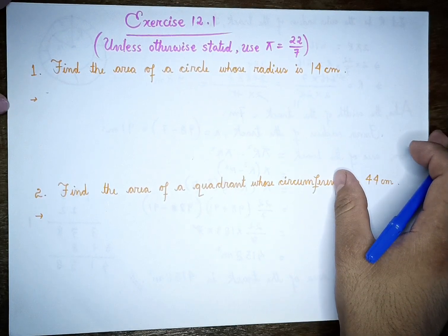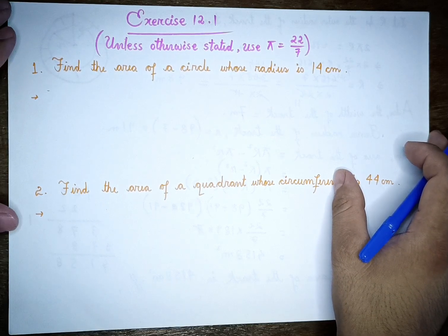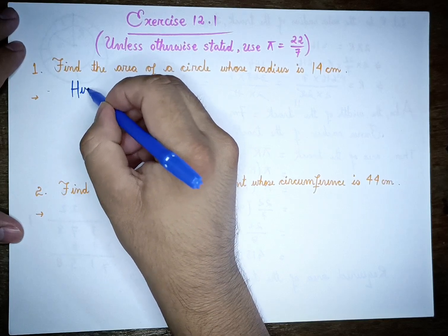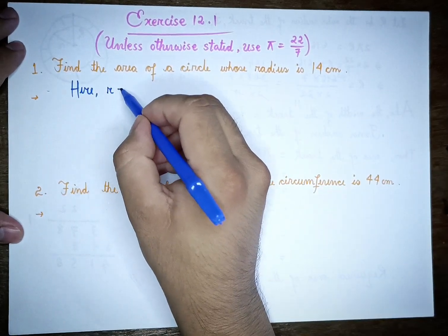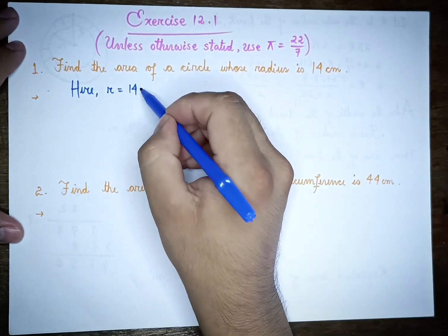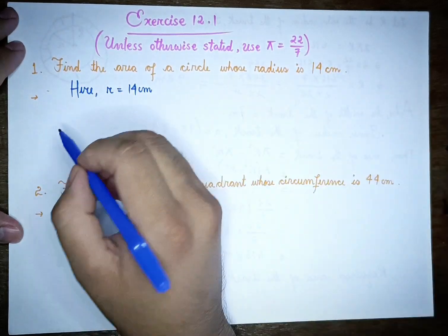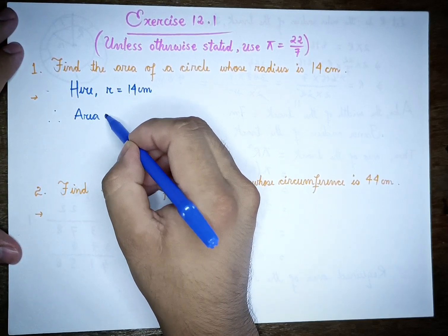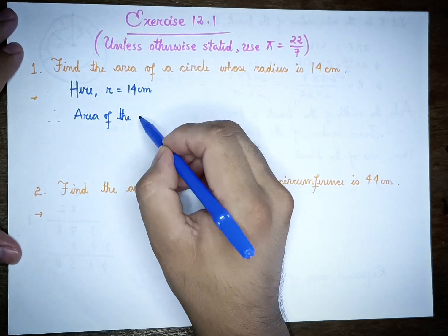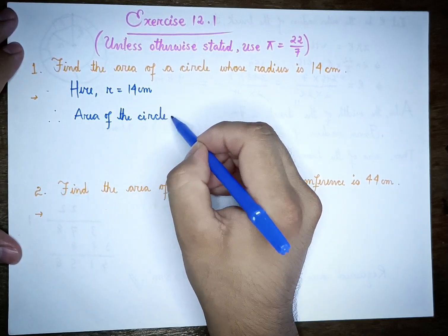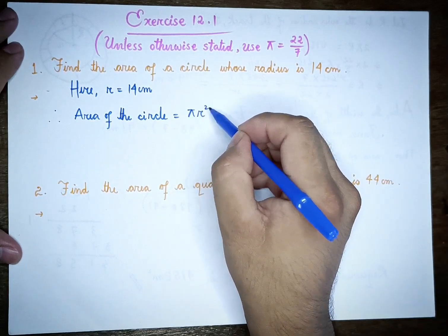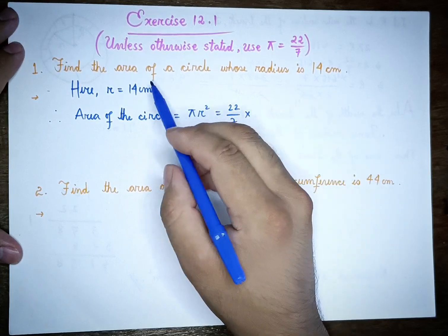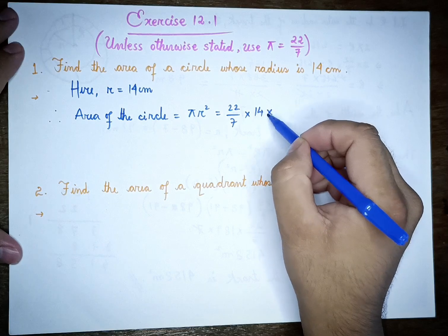The area of a circle is pi r squared. The radius of the circle is 14 cm. The value of pi is 22 by 7, and the value of r is 14.